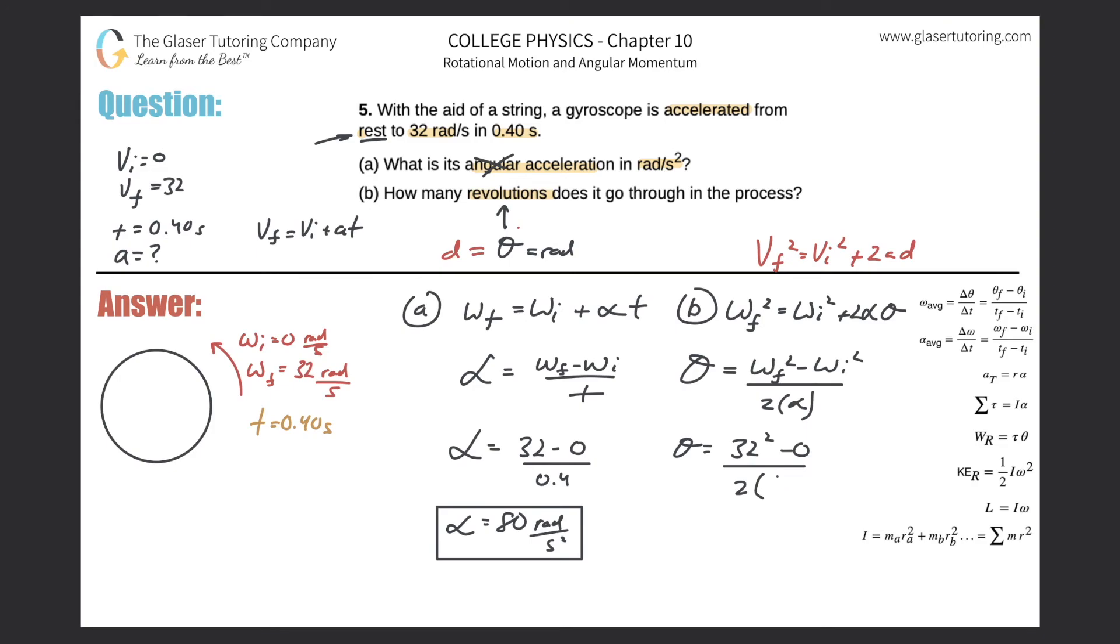Let's see what we get in terms of theta. It's going to be 32 squared divided by two times 80, and here we get a value of 6.4.